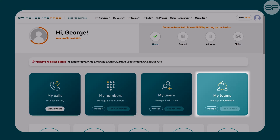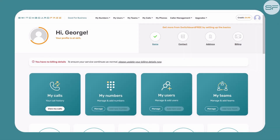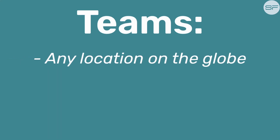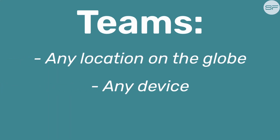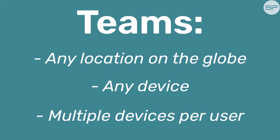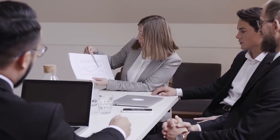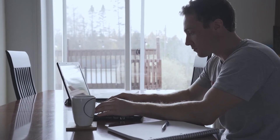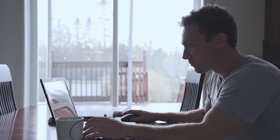You may also add your users into a team. A team is a call group comprised of members of the same organization or department. When a call is received and redirected to a team, every member of that team is called simultaneously. Each member can be in any location anywhere on the globe and be on any device — via a landline, mobile phone, or Switchboard Free soft phone. Furthermore, if a team member has multiple registered devices, for example a soft phone and a landline, both will ring at the same time.